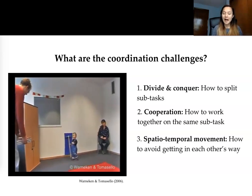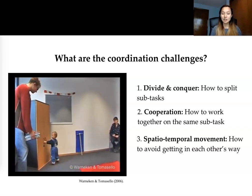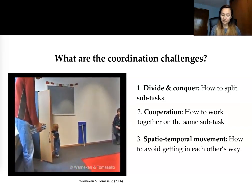And finally, three, spatial temporal movement. How should we avoid getting in each other's way? This can be interpreted as collision avoidance.